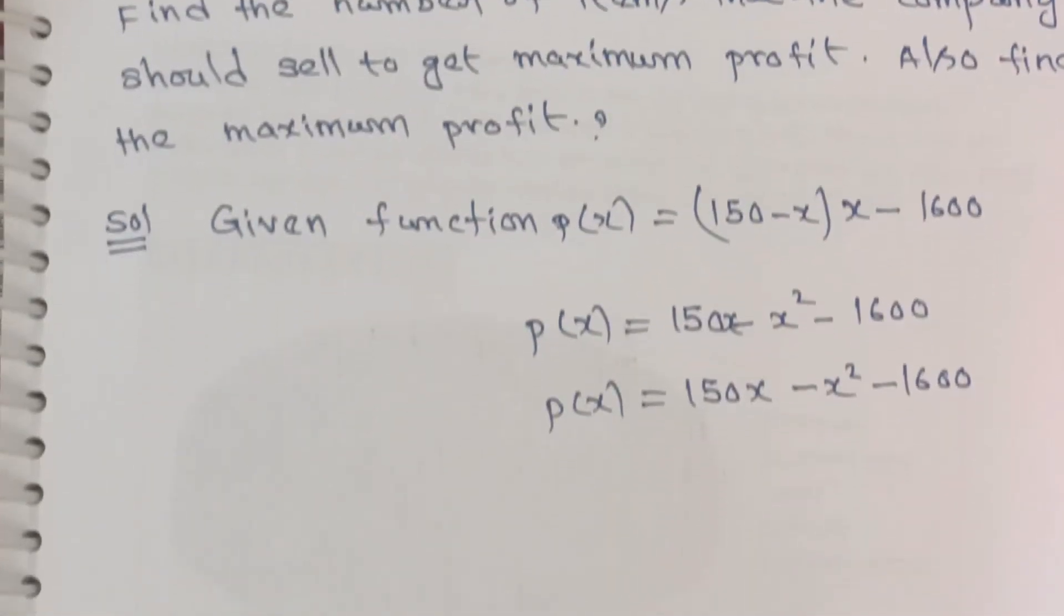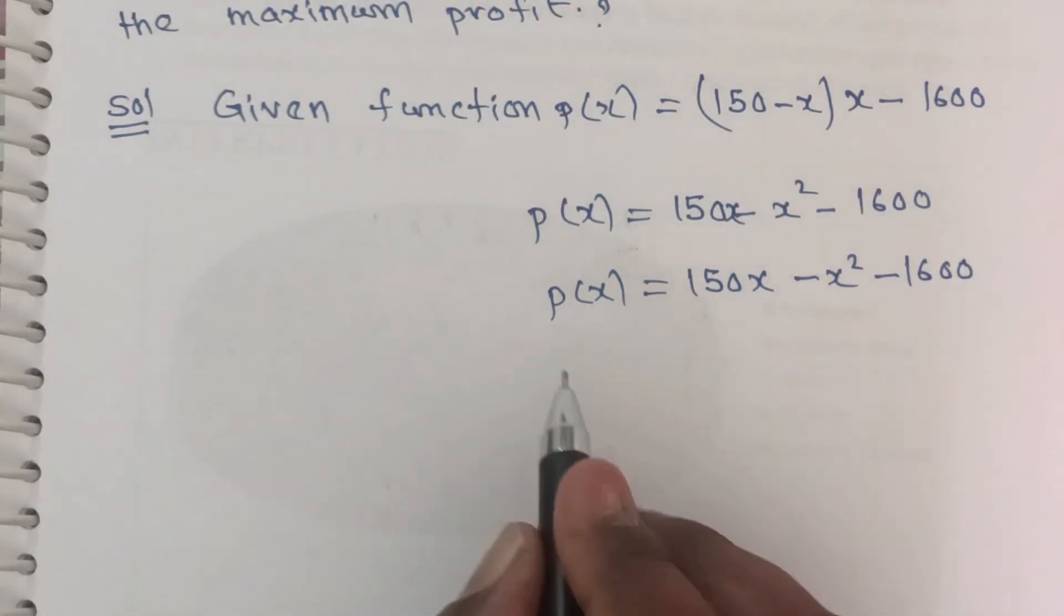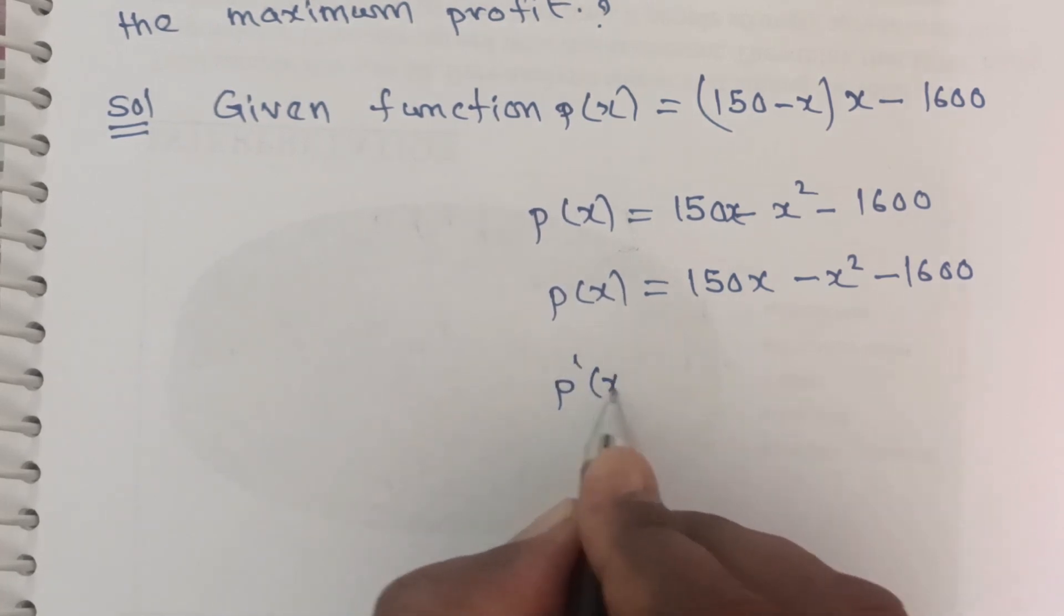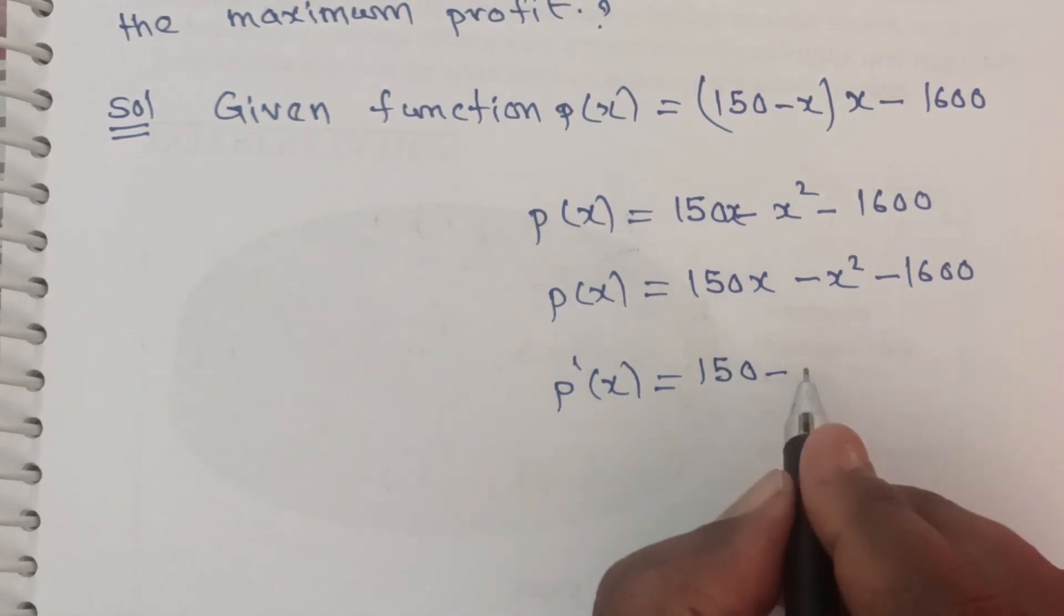For this function, we'll do two derivations - first derivation with respect to x, then the second derivative to determine the nature of the critical point.